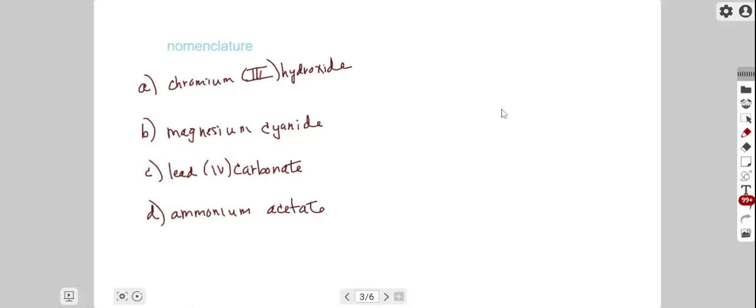This question is going to deal with nomenclature or how to properly name and write the formulas for substances. The first example we have is chromium III hydroxide. This 3 whenever it's given for a transition metal represents the charge on the transition metal since they can have different charges.